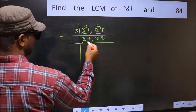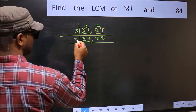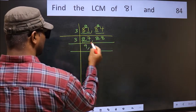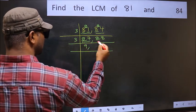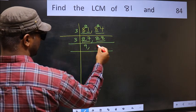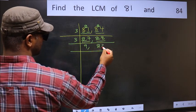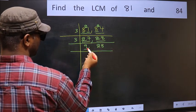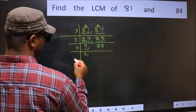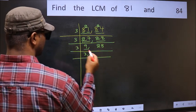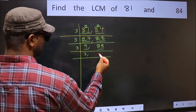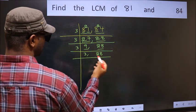Now we have 27. 27 is divisible by 3 — 3 nines are 27. The other number is 28, which is not divisible by 3. So you write it down as it is.